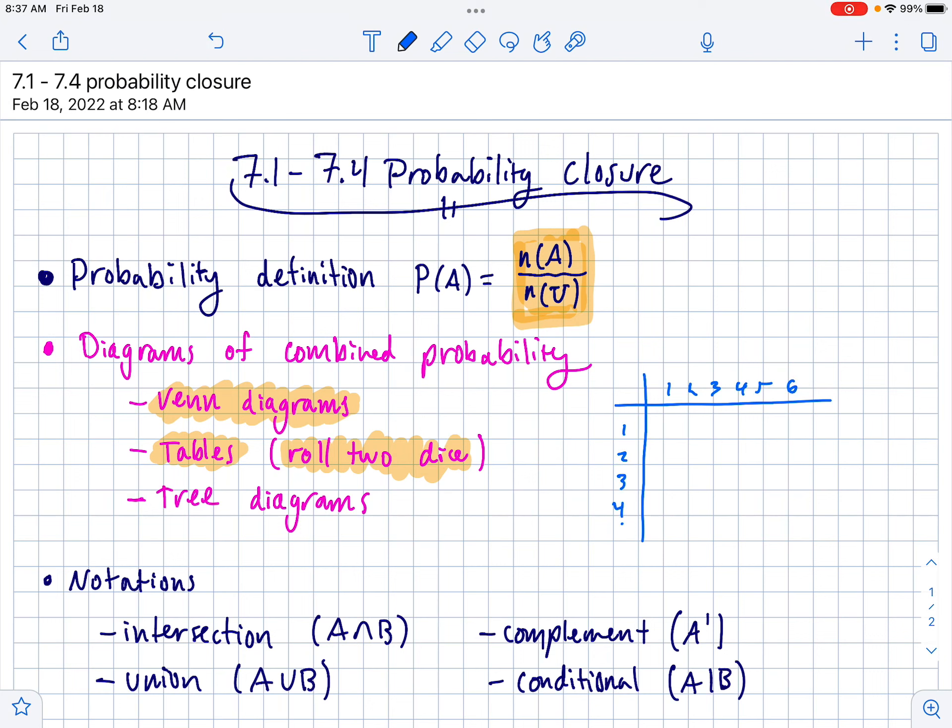So you do one, two, three, four, five, six, and one, two, three, four, five, six. And then you put all the different possibilities in here. Maybe you're adding them together, maybe you're multiplying, who knows?